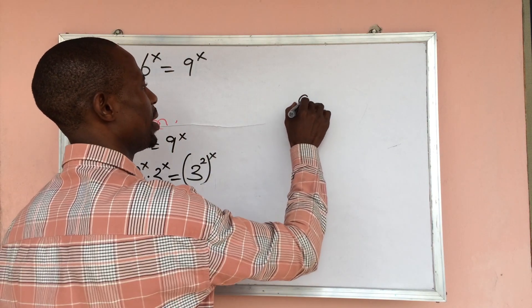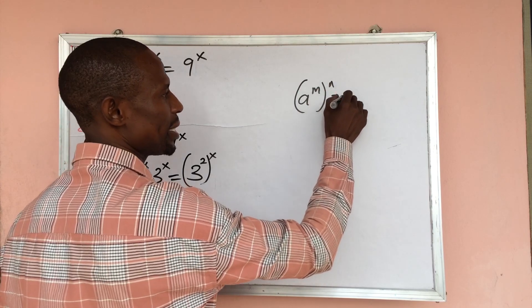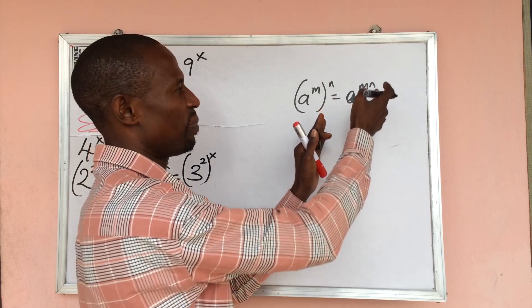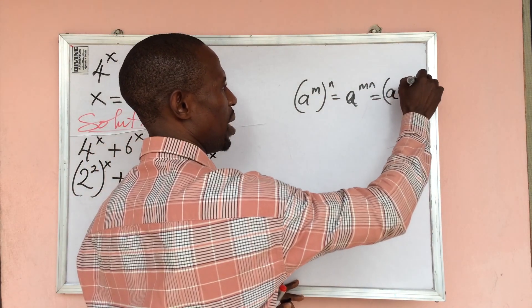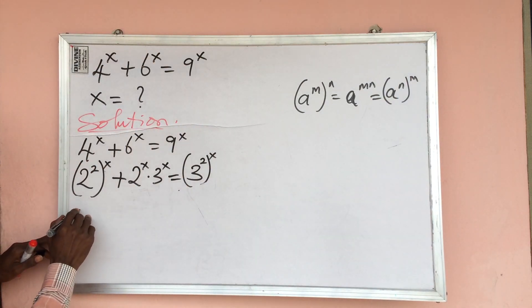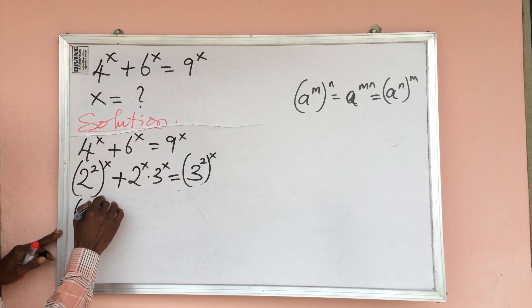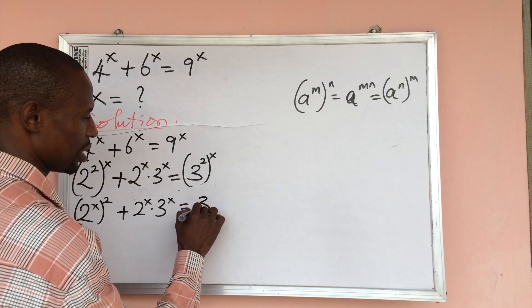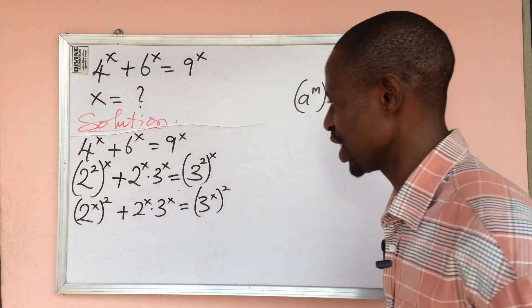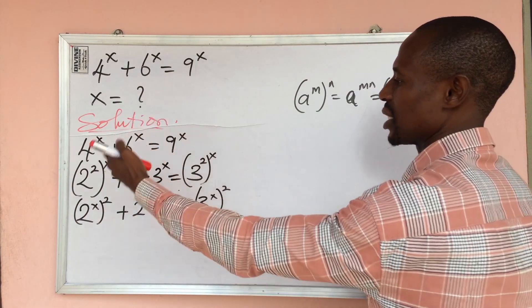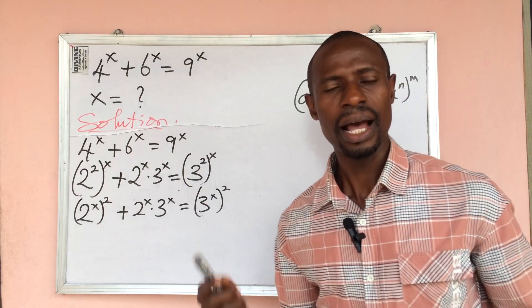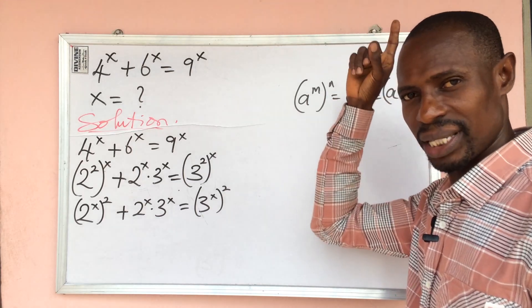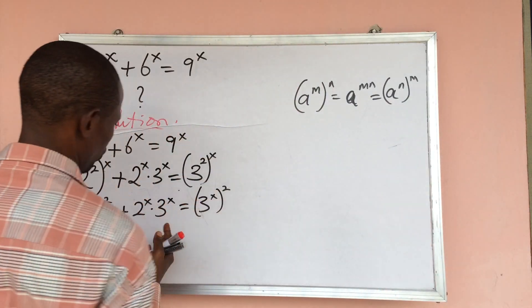Using the indices law, we can interchange powers. So we rewrite the expression as: 2 to the power of x, close bracket, to the power of 2, plus 2 to the power of x times 3 to the power of x, equals 3 to the power of x, all to the power of 2. I produced a video on the rules of indices titled 'The Several Pillars of Indices' — you can find this rule demonstrated there.